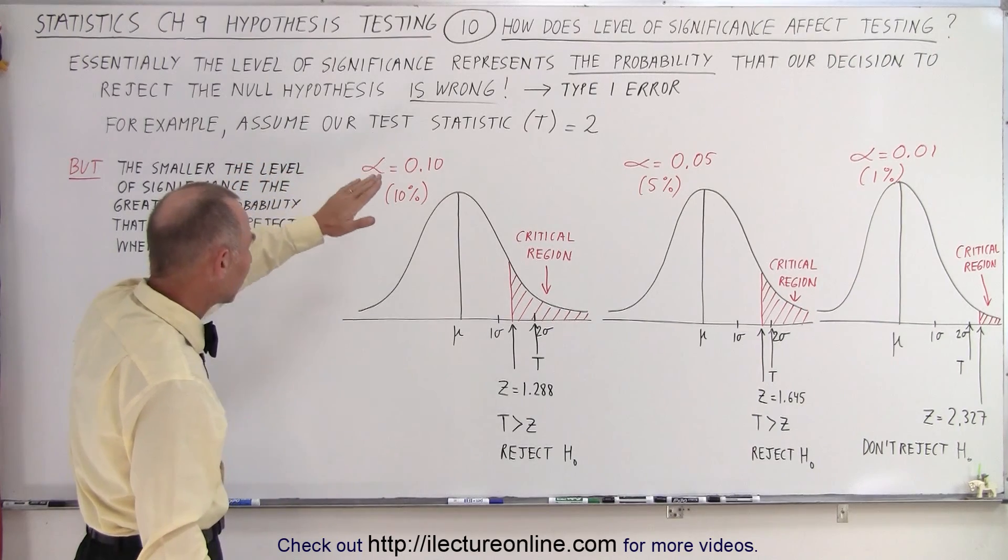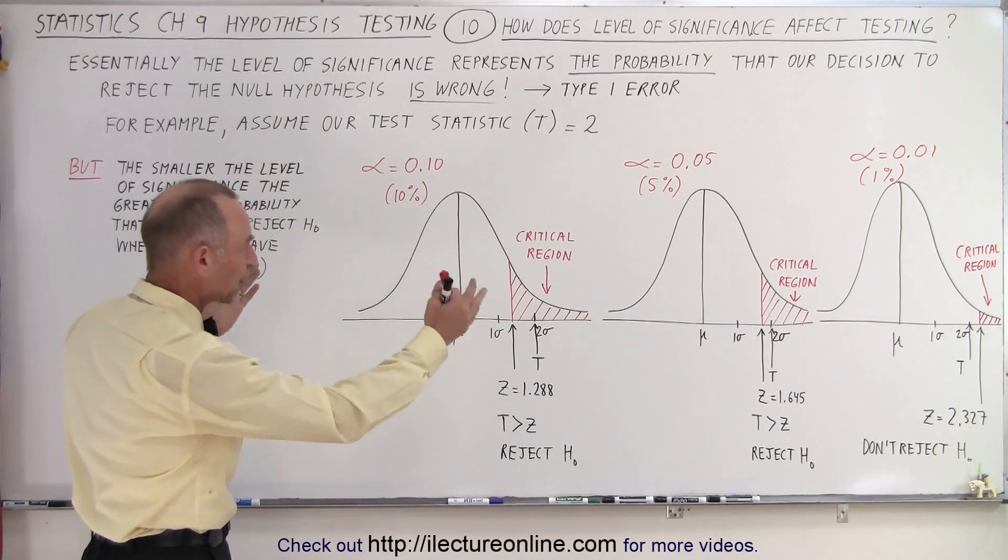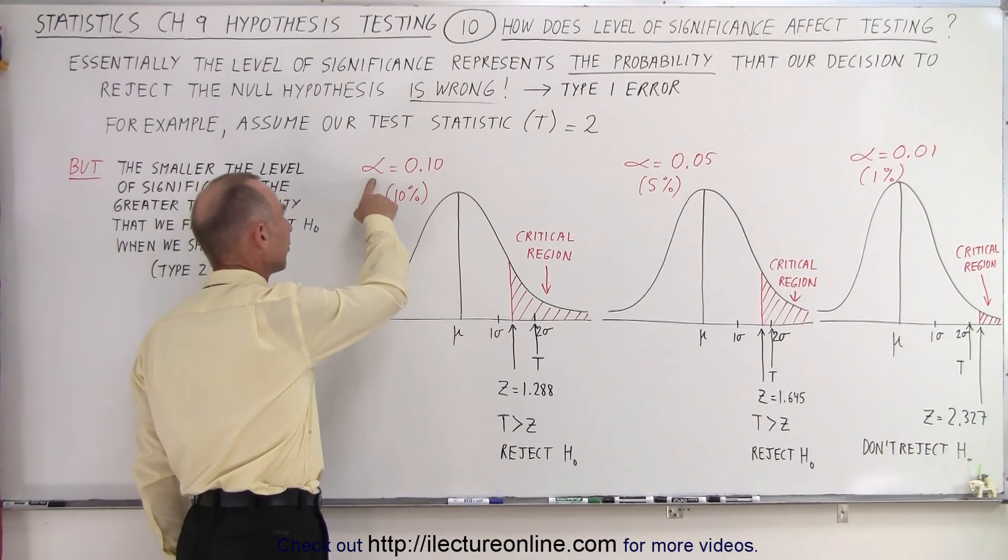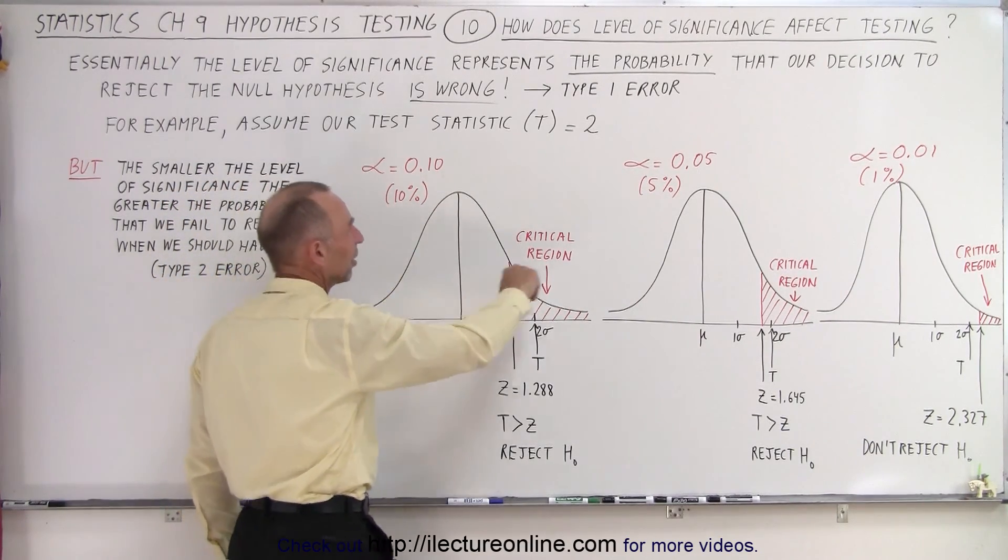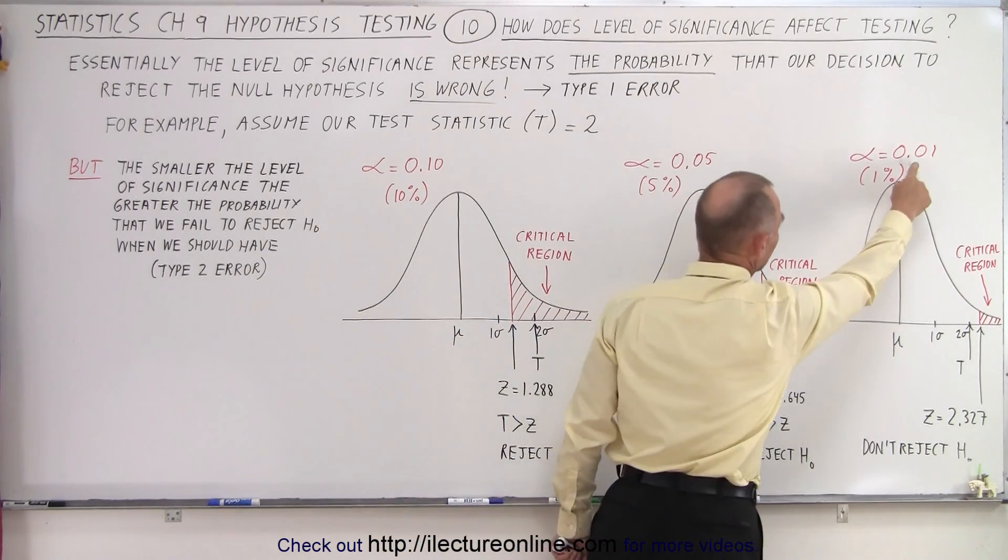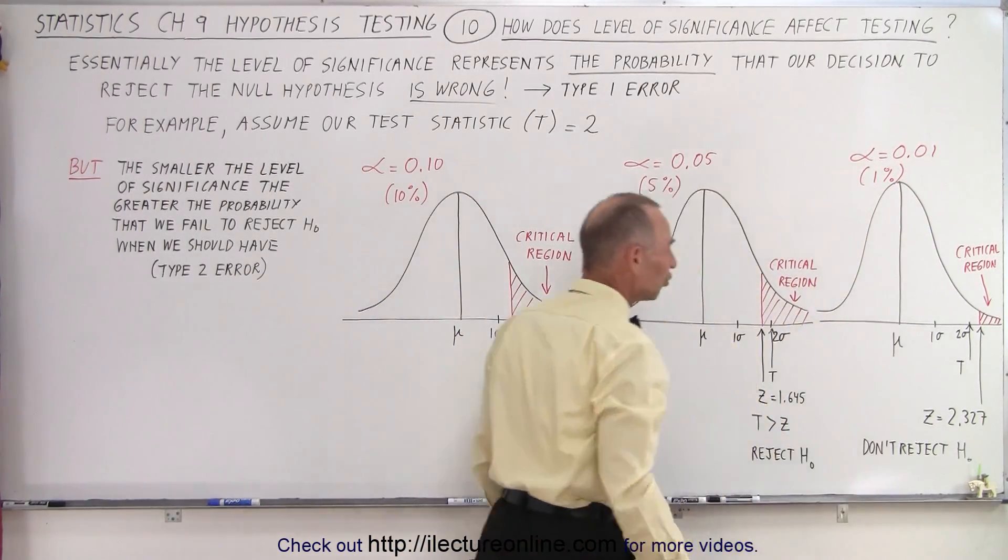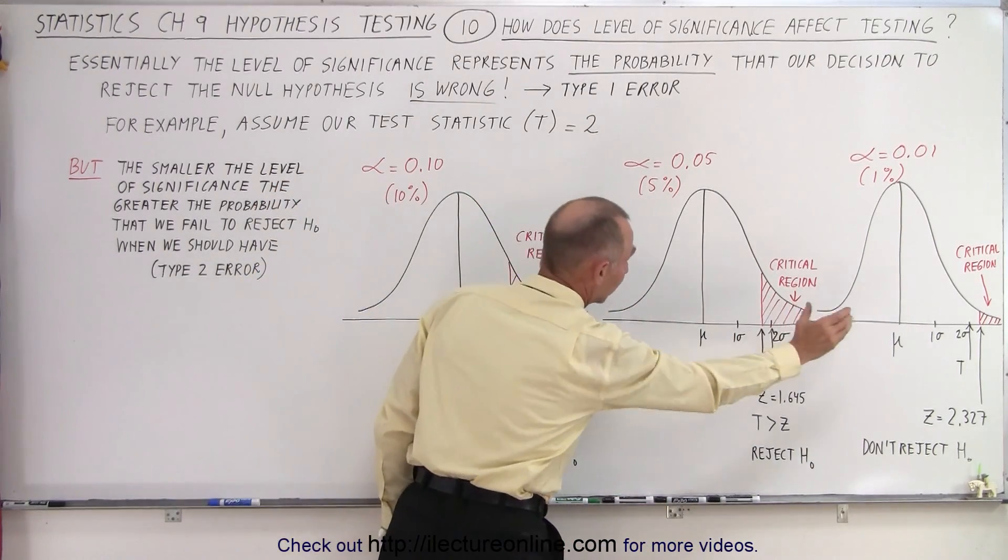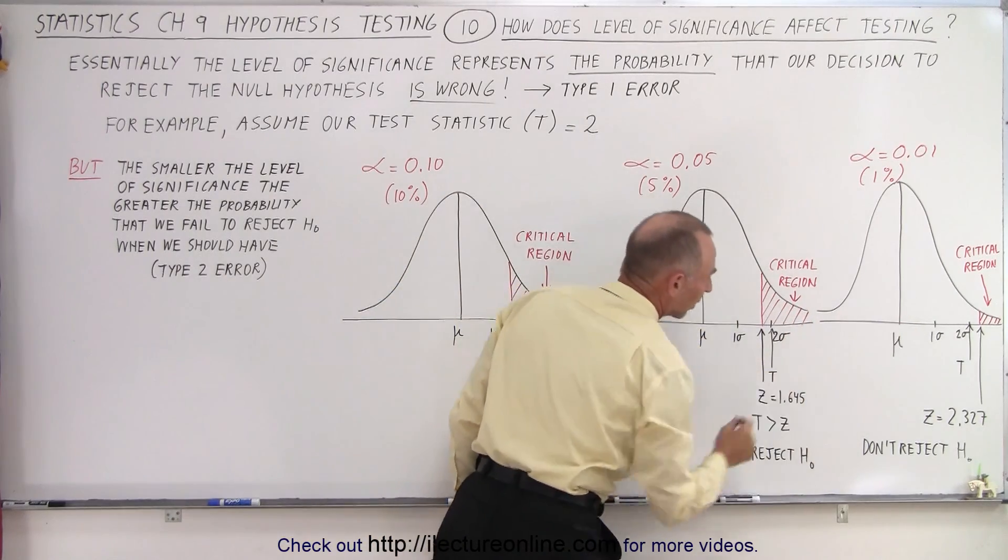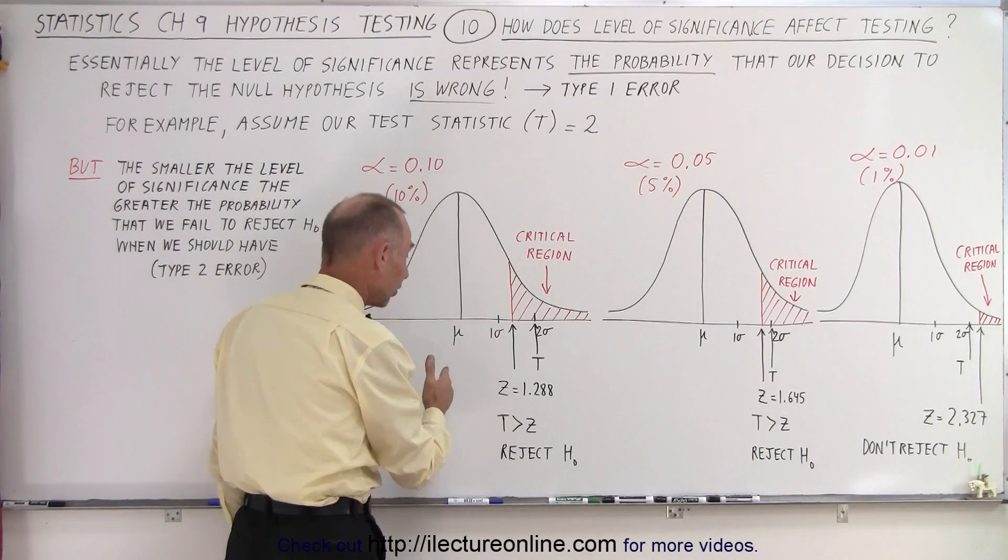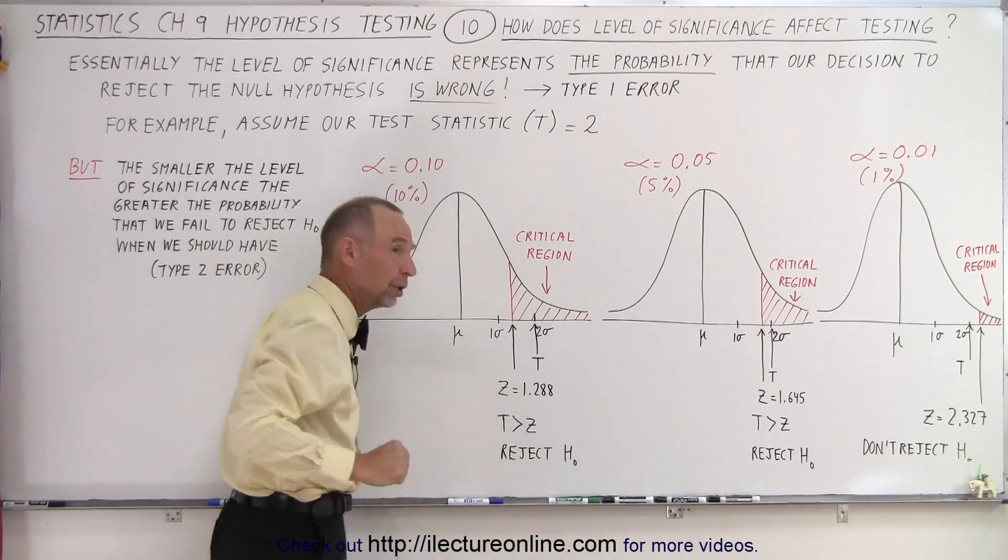Let's assume that our test statistic T equals 2. We have three examples, three graphs here that represent a level of significance of 0.10 (10%), 0.05 (5%), and 0.01 (1%). Notice that the smaller the level of significance, the smaller the critical region becomes, and the less likely that the test statistic will fall within that critical region.